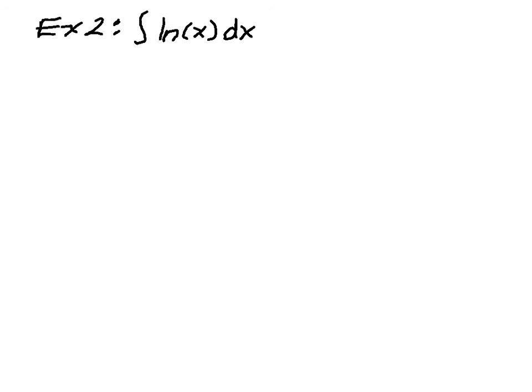This is actually a pretty typical example. I mean, it's probably the standard example of what I'm about to do. So again, I need to pick a u, and I need to pick a dv.